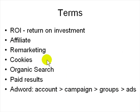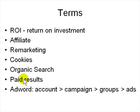Key online marketing terms: ROI means Return on Investment — you put in five dollars and measure how much you get back. An affiliate is a company that does marketing for you. Remarketing means you keep marketing the same thing again and again to someone who showed interest. Cookies are like tokens — unique numbers given to identify a user, like a number plate on a car. Organic search is a free search. Paid results are the results at the top that advertisers pay for. An AdWords account contains campaigns, groups, and ads, and the best thing is to play around with it.